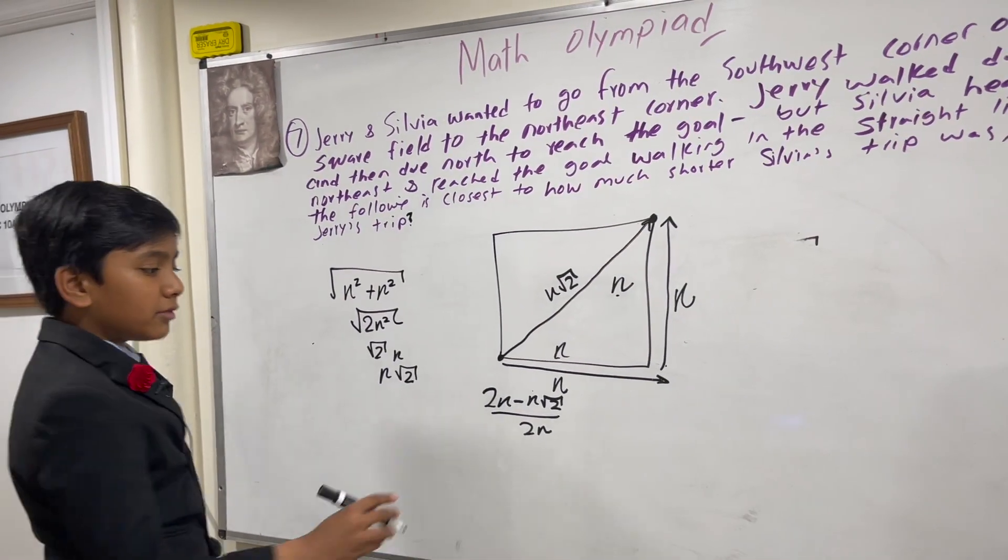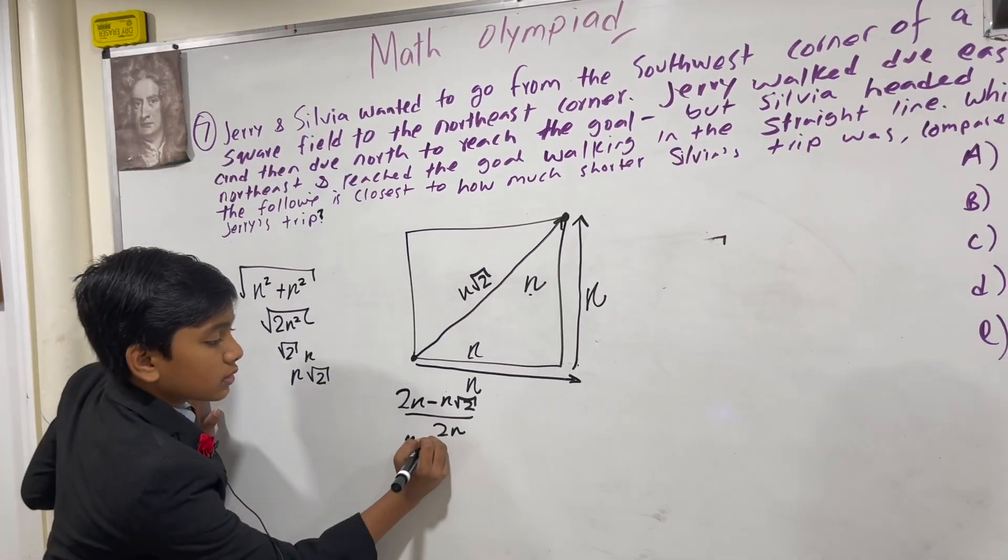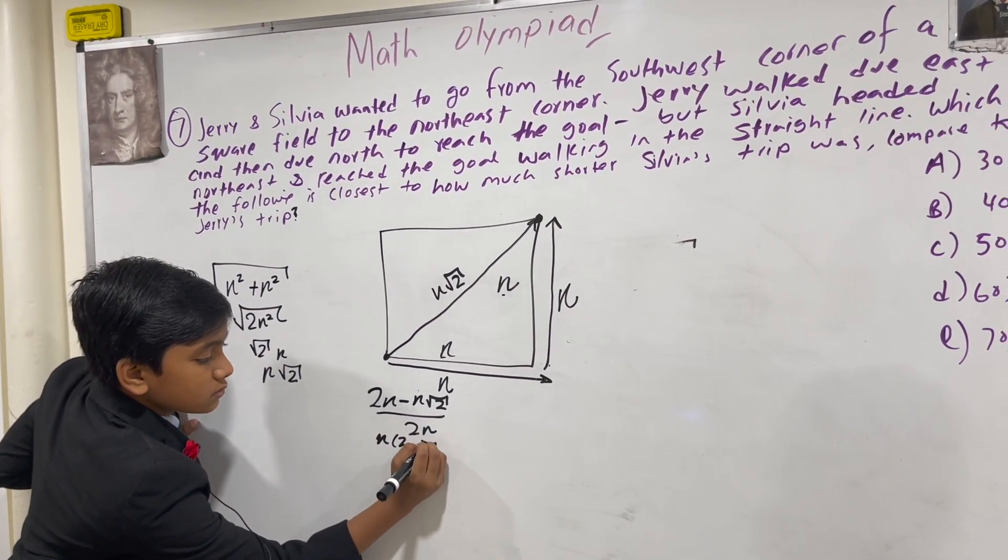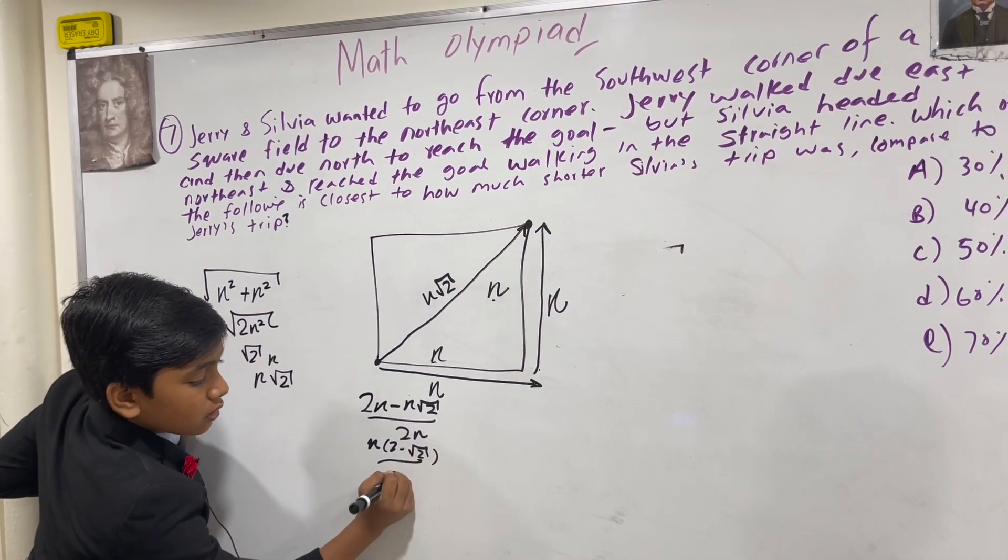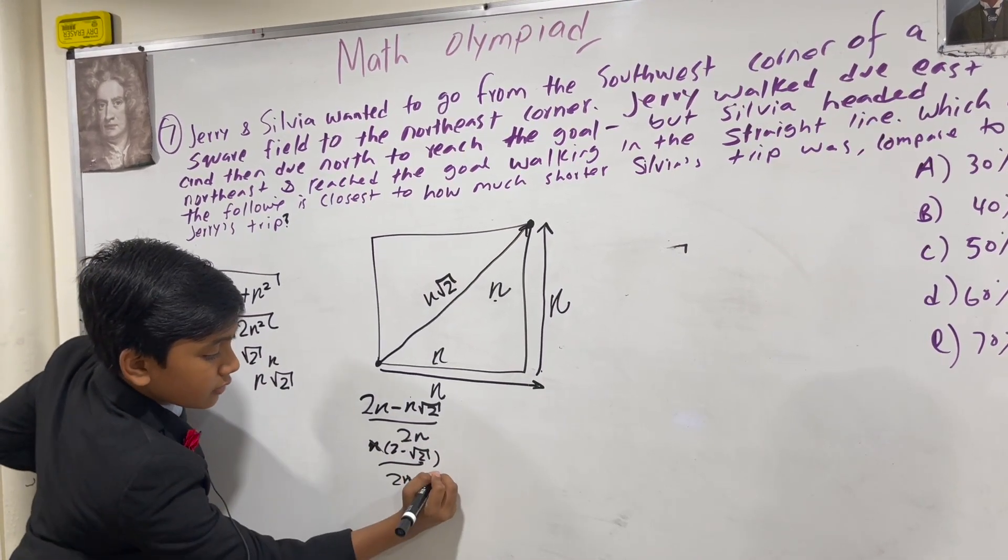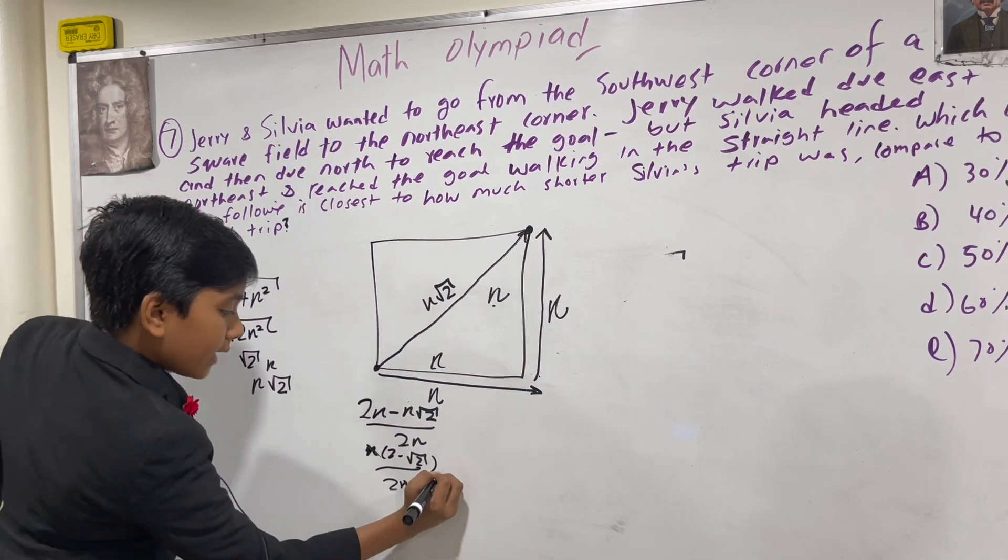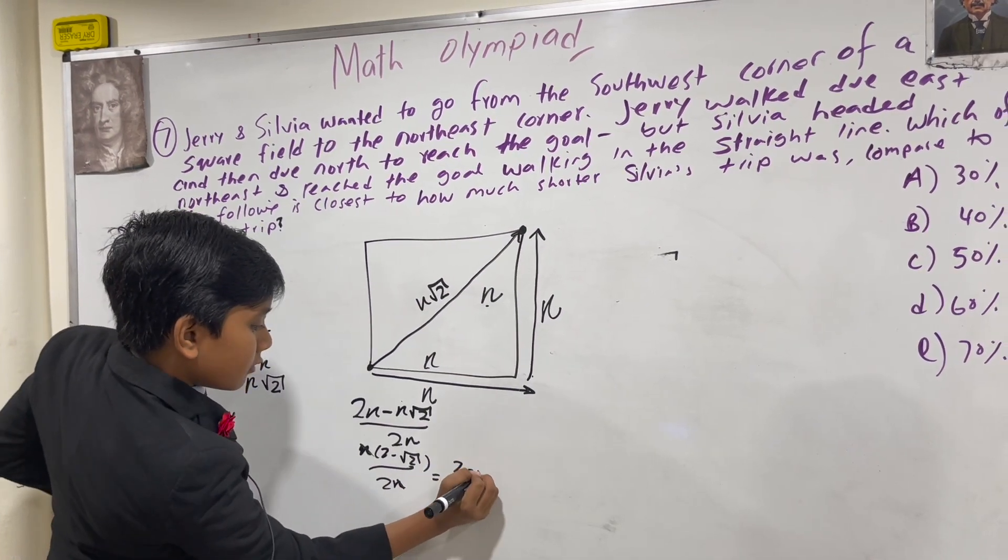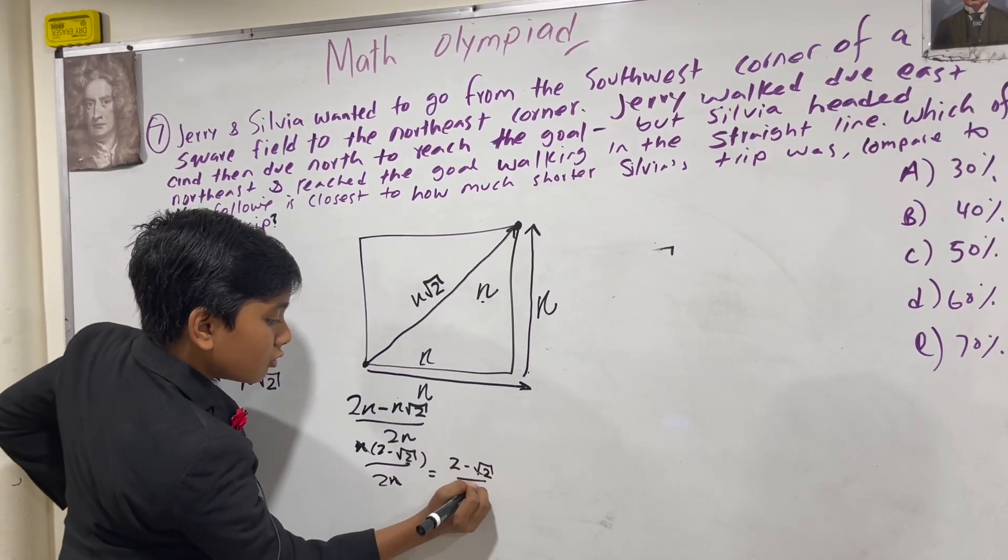First of all, we can factor out N from this whole thing. These two cancel, and that leaves us with 2 minus root 2 over 2.